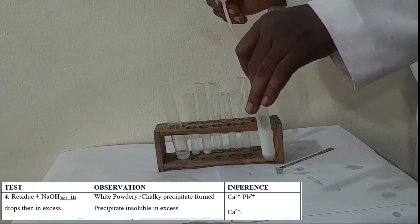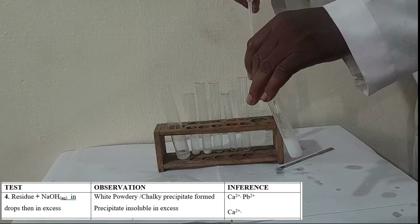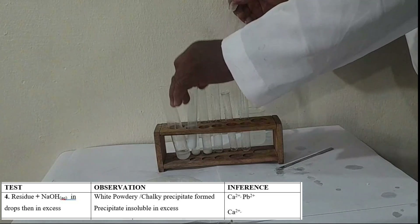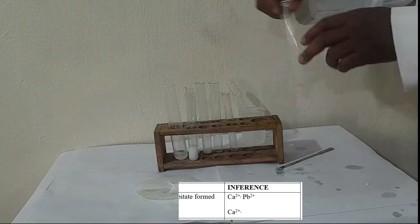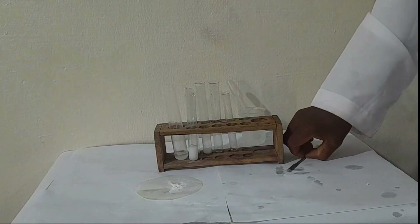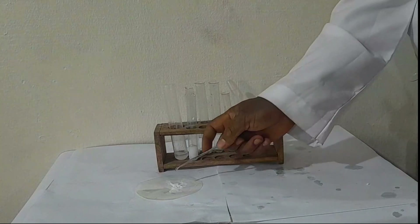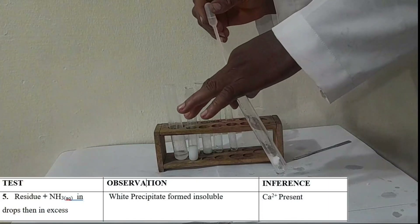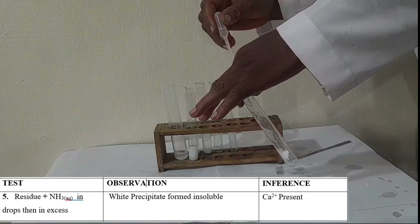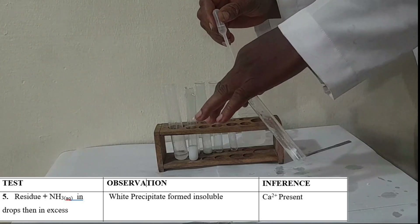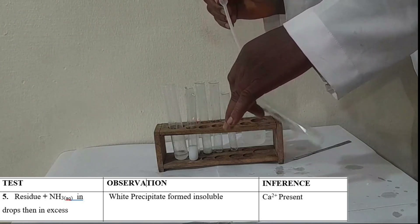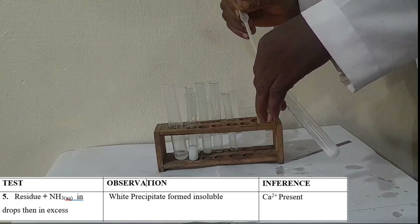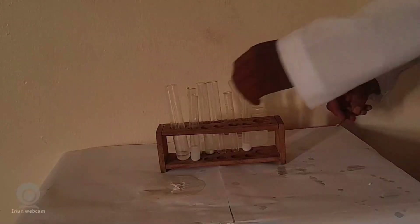Let's pick another sample and test with ammonia solution. On adding ammonia solution, a white precipitate forms again — indicating the presence of calcium ion.